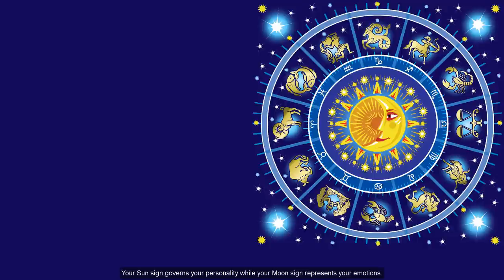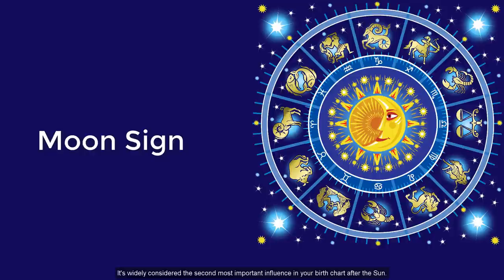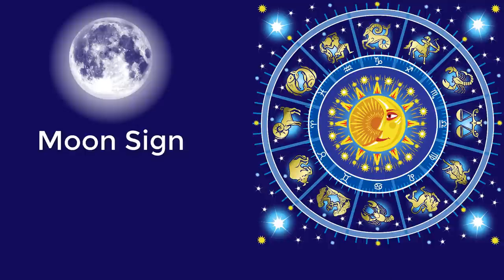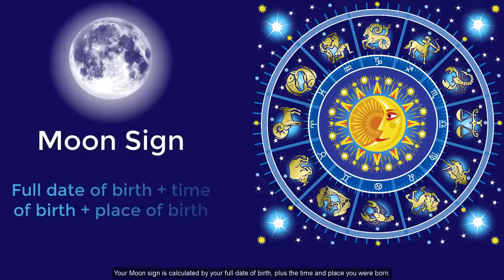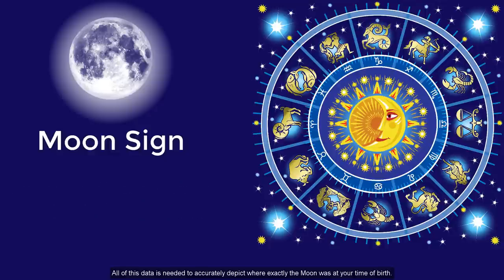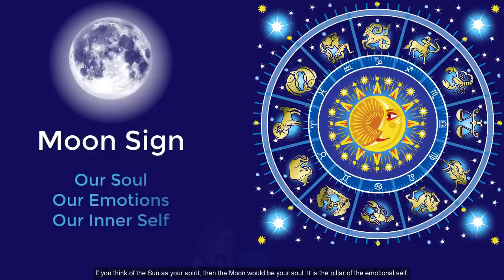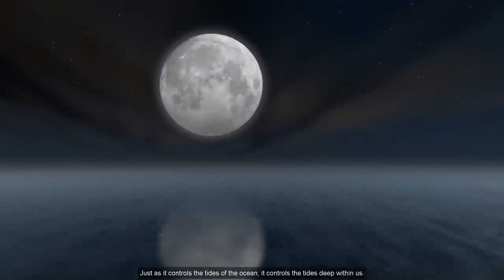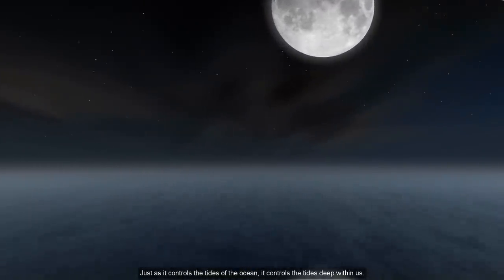Your sun sign covers your personality, while your moon sign represents your emotions. It's widely considered the second most important influence in your birth chart after the sun. Your moon sign is calculated by your full date of birth, plus the time and place you were born — all of this data is needed to accurately depict where exactly the moon was at your time of birth. If you think of the sun as your spirit, then the moon would be your soul. It is the pillar of the emotional self; just as it controls the tides of the ocean, it controls the tides deep within us.